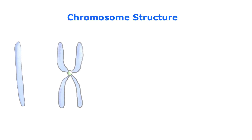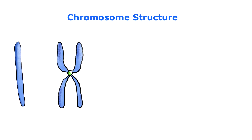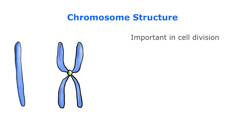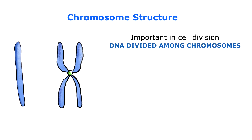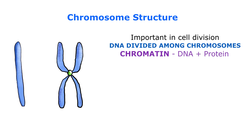In today's video we're going to be talking about chromosome structure. Chromosomes are very important when we're talking about cell division, and in humans the DNA is divided among chromosomes. They also contain some proteins as well. The combination of DNA and proteins is called chromatin.